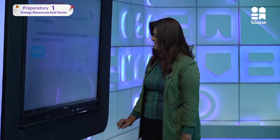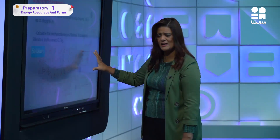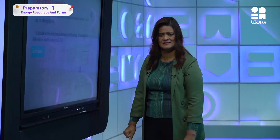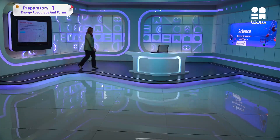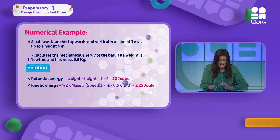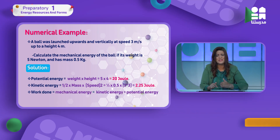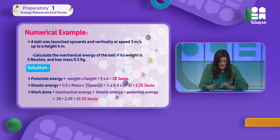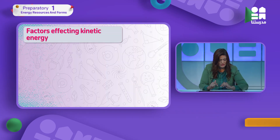This is the easy method to solve problems: write the given in a box and use the given to solve. To summarize: potential energy = weight × height = 5 × 4 = 20 joules. Kinetic energy = ½mv² = 2.25 joules. Work done equals mechanical energy equals kinetic plus potential energy = 20 + 2.25 = 22.25 joules.